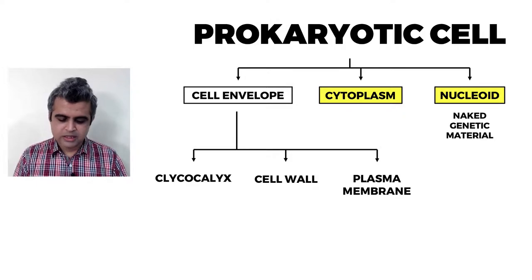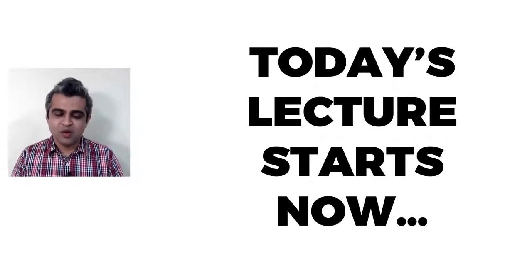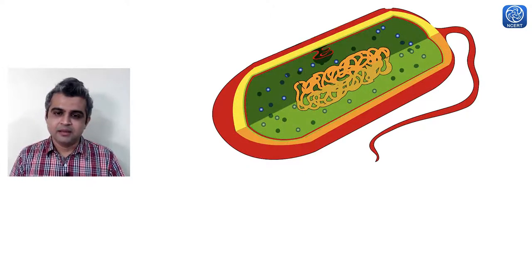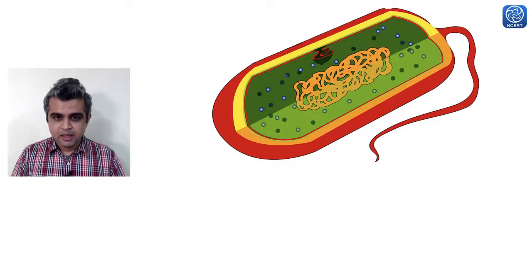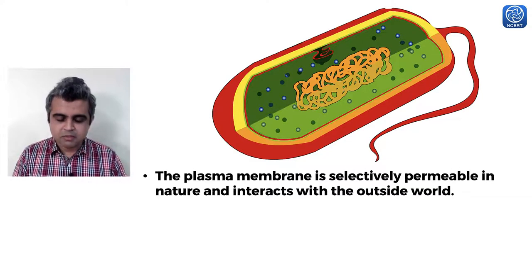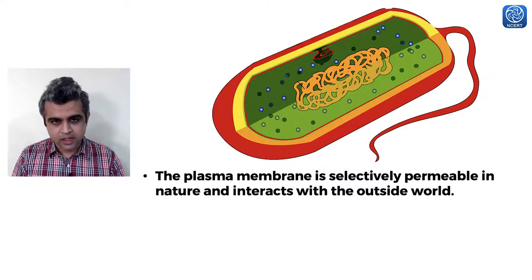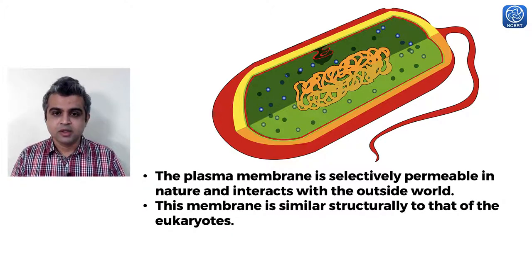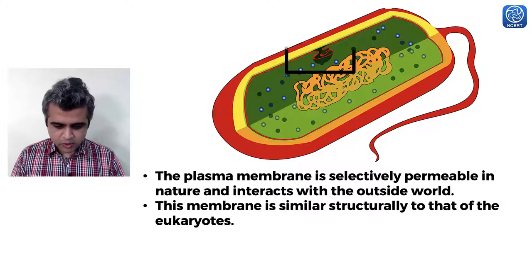Today's lecture begins now. The prokaryotic plasma membrane is selectively permeable, structurally similar to the eukaryotic phospholipid bilayer fluid mosaic model, and interacts with the outside world. However, there is something unique about the prokaryotic plasma membrane.